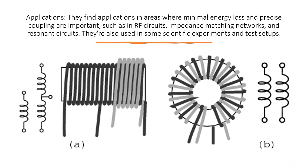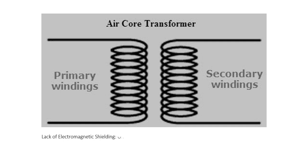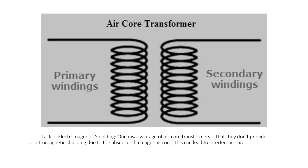Lack of electromagnetic shielding, one disadvantage of air core transformers is that they don't provide electromagnetic shielding due to the absence of a magnetic core. This can lead to interference and noise issues in certain applications.